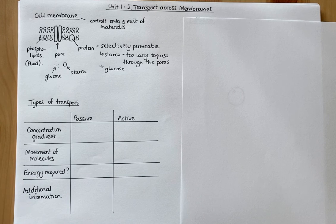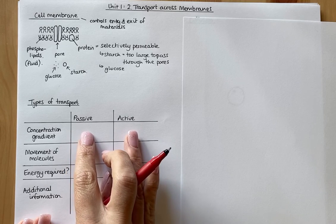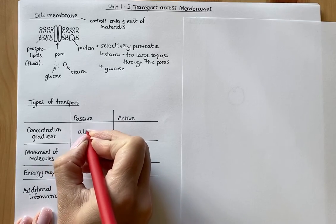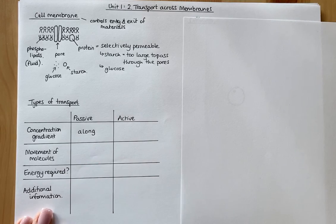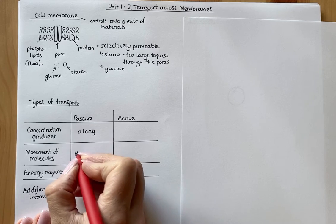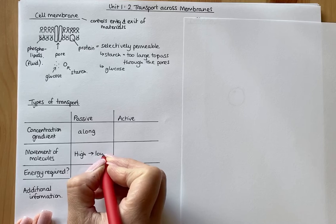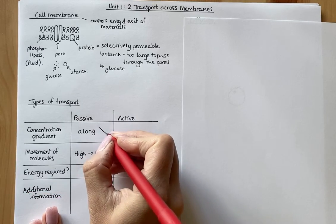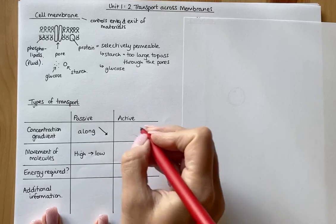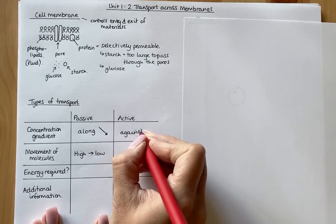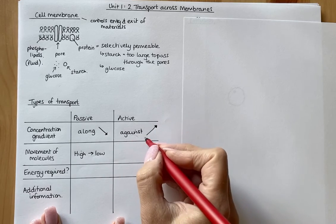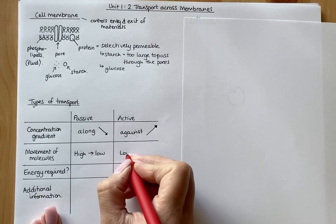You need to know the two different types of transport: passive and active. Passive transport moves molecules along a concentration gradient — down the hill from high to low concentration. Active is the opposite: it moves substances against that concentration gradient, so up the hill, from an area of low concentration to an area of high. So passive is high to low, and active is low to high.